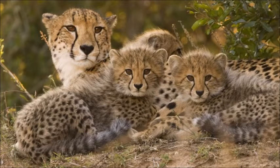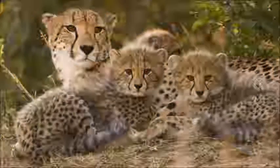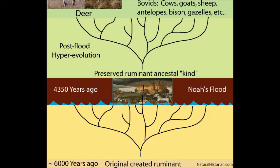Their bottleneck resulted in a major loss of genetic diversity, but it wasn't anywhere near the magnitude of bottlenecking that creationists proclaim. Such incestuous breeding for so long would destroy humanity, but creationists have absolutely no problem believing that humanity twice survived generations of incestuous breeding.